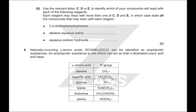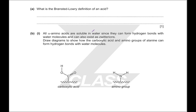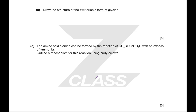To draw the zwitterionic form of glycine: zwitterionic means that the hydrogen actually moves over to the nitrogen group, so the molecule ionizes itself. You get a COO⁻ and an NH₃⁺, and you're just drawing that having moved the hydrogen over.